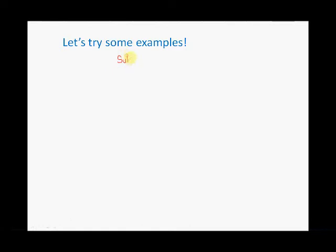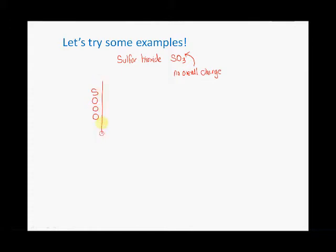We'll start off with sulfur trioxide, SO₃. The way to work that out is to take each of the atoms and put them in a column. Notice that SO₃ has no overall charge — it's a neutral molecule. So there's no charge overall, and that's important in working out the oxidation numbers. SO₃ has one S and three oxygens. The overall charge is zero, so all oxidation numbers must add up to zero.